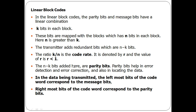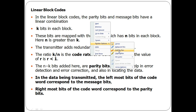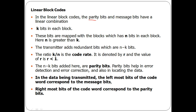Linear block codes have k message bits and n minus k check bits. A linear combination of the message bits produces the check bits, also called parity bits. The code rate is the ratio of message bits k to the total block size n. Parity bits help us in error detection — identifying where the error happened — and error correction, which is locating and correcting the error.